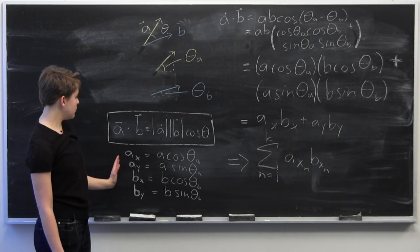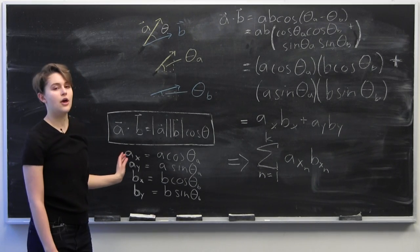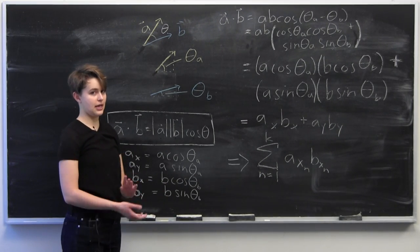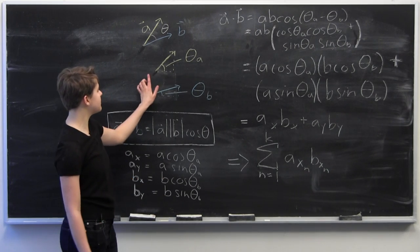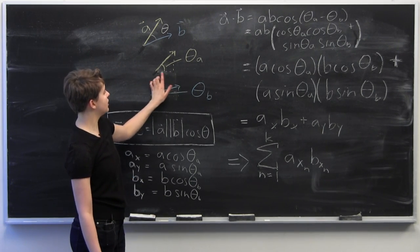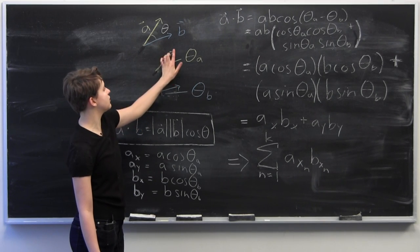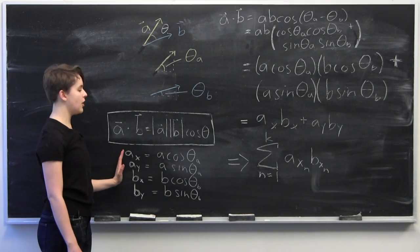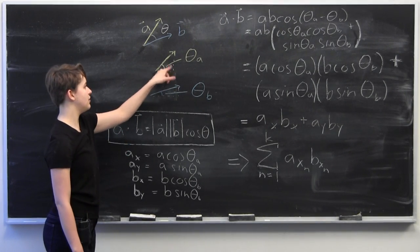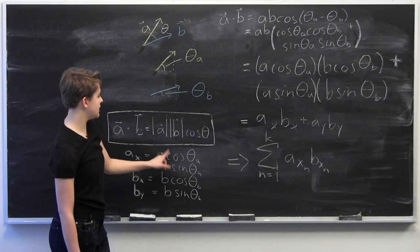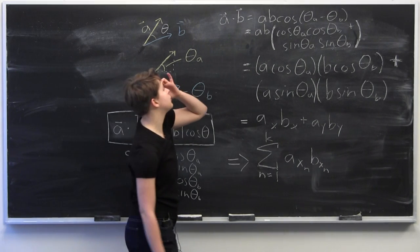For the purpose of this proof, it is useful to consider what I will call a_x, a_y, b_x, and b_y. So a_x is just going to be the length of this here along the x-axis, and a_y is going to be along the y-axis. And the same goes for b. This is just a component-wise vector decomposition of these vectors here. So using these, I'm going to begin the proof here.